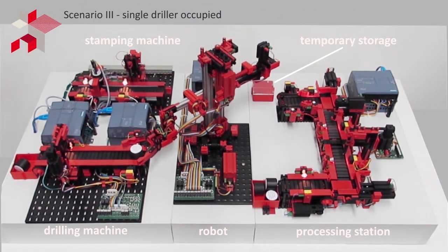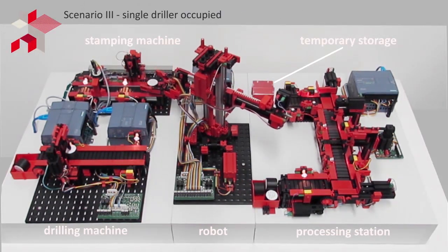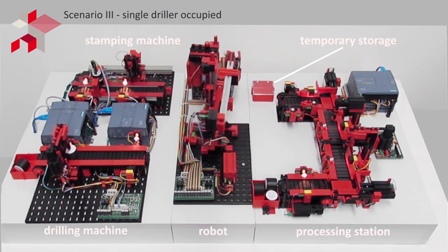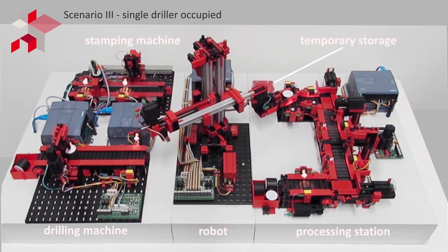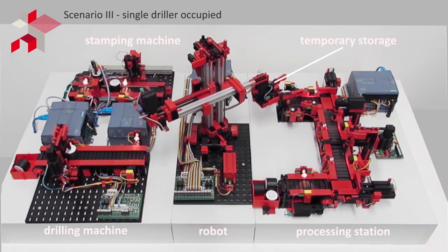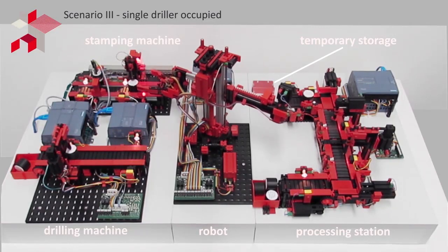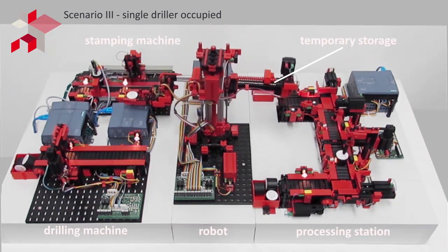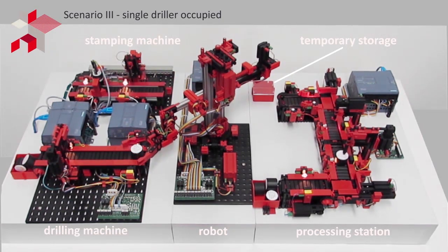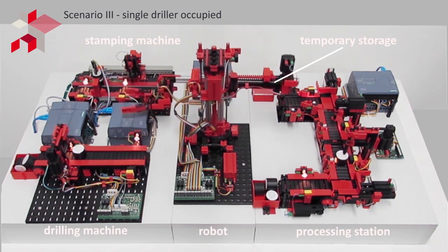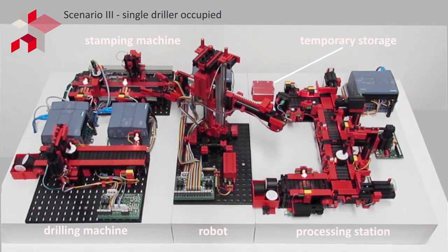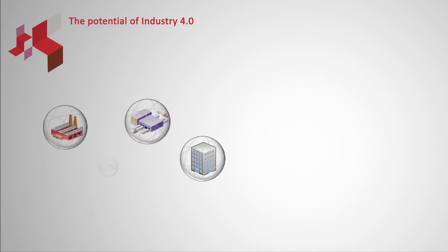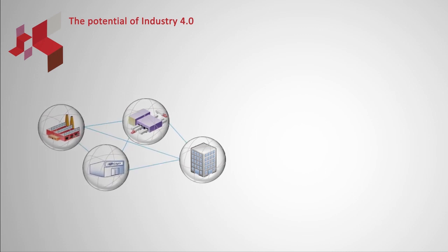Scenario 3 shows the situation when the single drilling machine is occupied. The production piece next in line is moved towards the processing station and then put into a waiting queue. The drilling machine and the combined processing station communicate to signal the robot their status of either occupied or vacant. With this automated process, utilization and the overall lead time of the entire system is optimized.